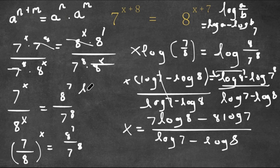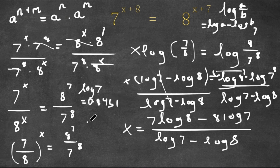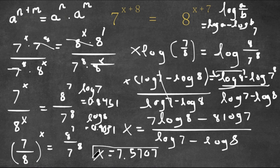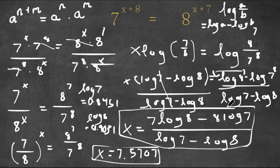Now, log 7 is actually equal to approximately 0.8451 and log 8 is equal to approximately 0.9031. So if we plug these values in, we get x is equal to 7.5707. So this is our answer.